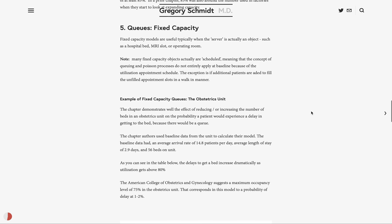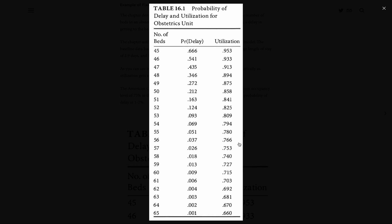In a fixed capacity queue, you could imagine that being a CT scanner, an MRI machine, or the number of beds in an ICU — the server is typically an object. It's important to realize that the type of modeling we're doing here is not scheduling appointments. If you had a CT machine and were scheduling slots to use it, in theory you won't have overlap in schedules and a queue will not develop. This fixed capacity queue modeling would apply if, for instance, you had extra time in the MRI machine schedule that you were trying to fill with the random walk-ins of new patients.